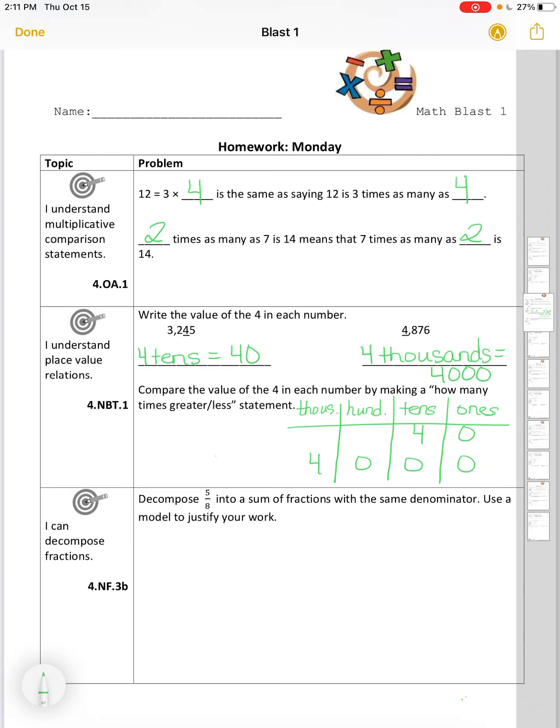Now, notice the 4 that's sitting in the tens place has to shift two times on the place value chart to get from the tens to the hundreds to the thousands. And each time a digit shifts to the left on a place value chart, it multiplies by 10. So we're multiplying by 10 and then multiplying by 10 again.